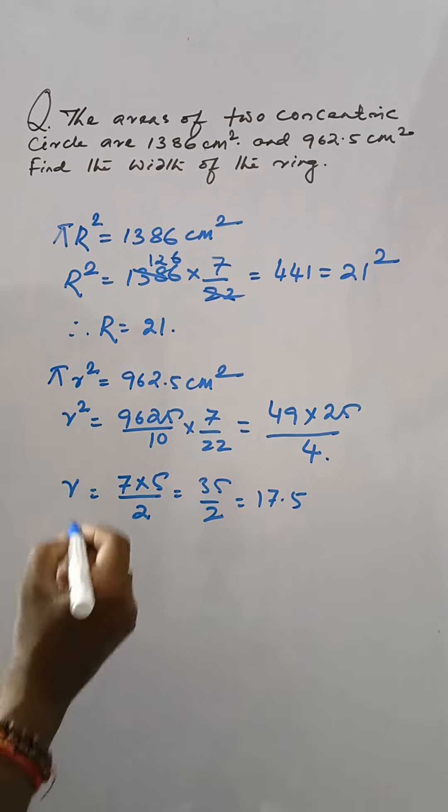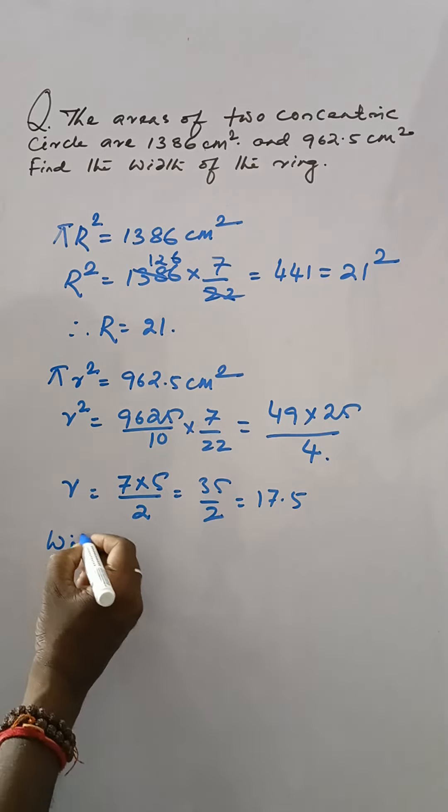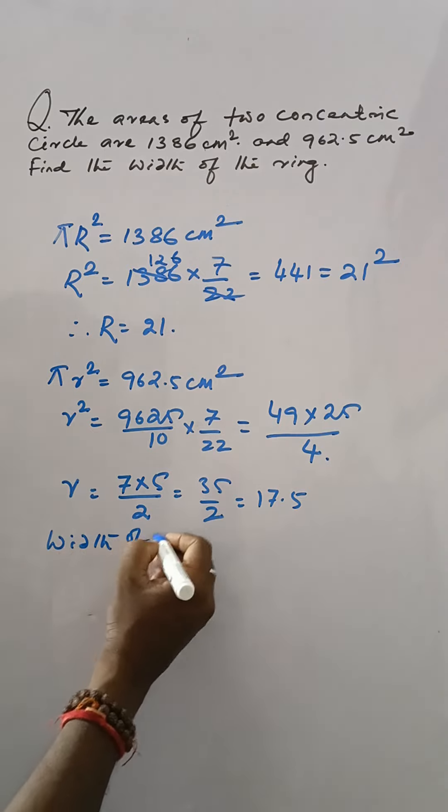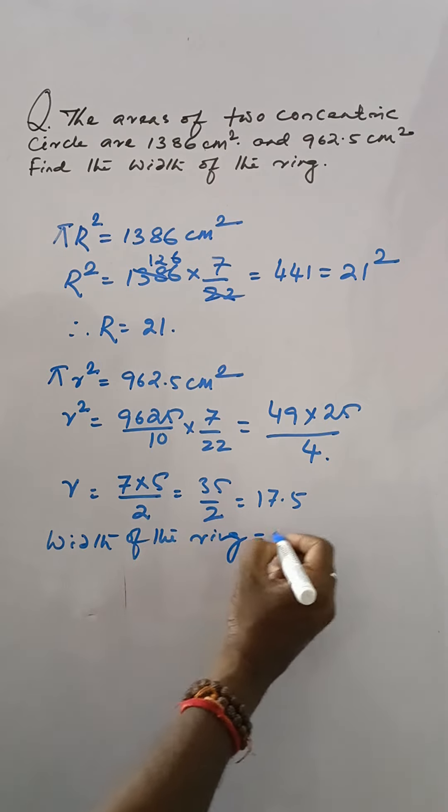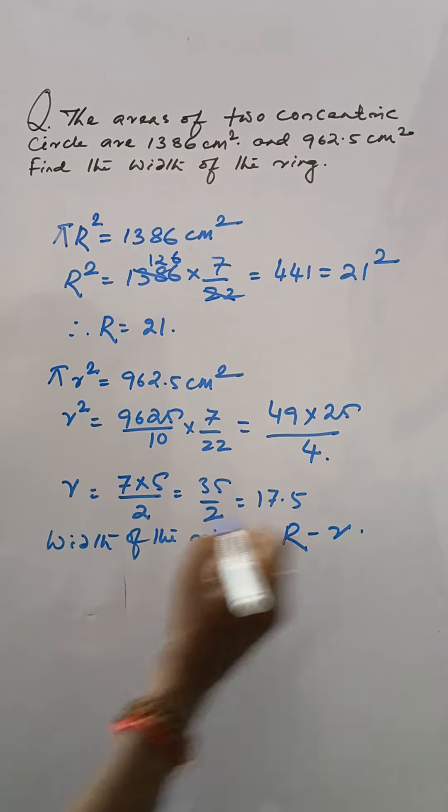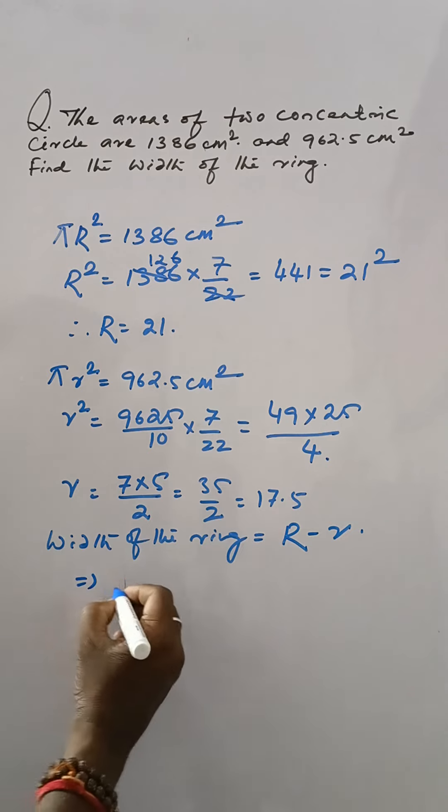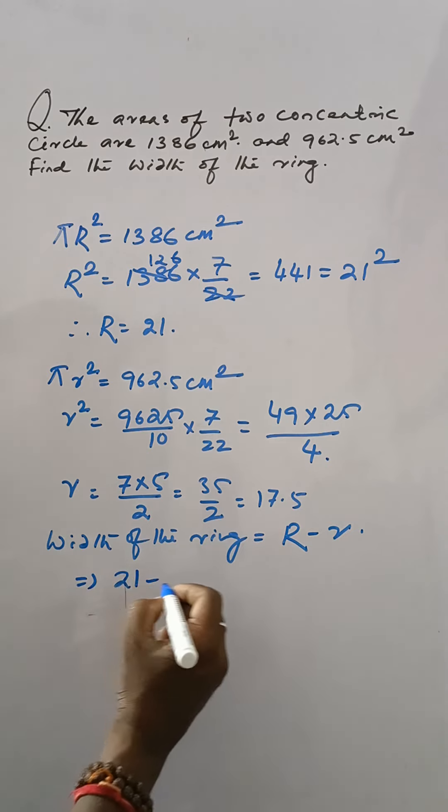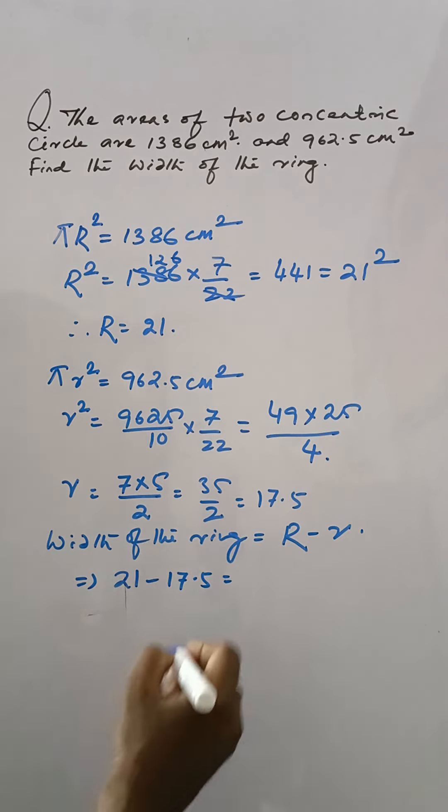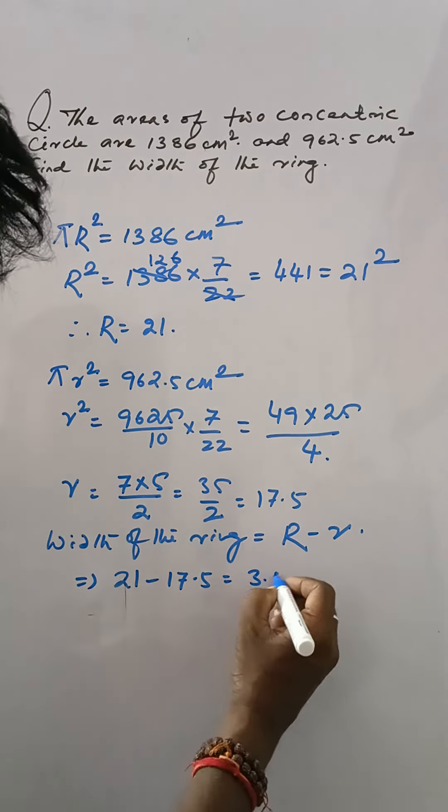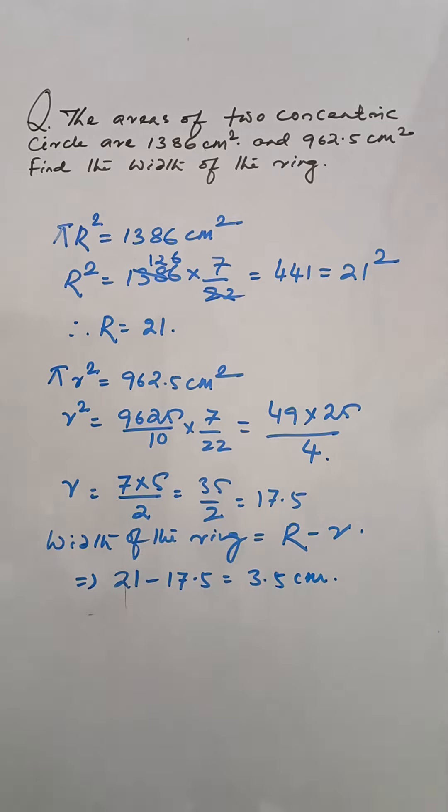Then width of the ring. Width of the ring is equal to r minus r. So that 21 minus 17.5 that is 3.5 cm is the answer.